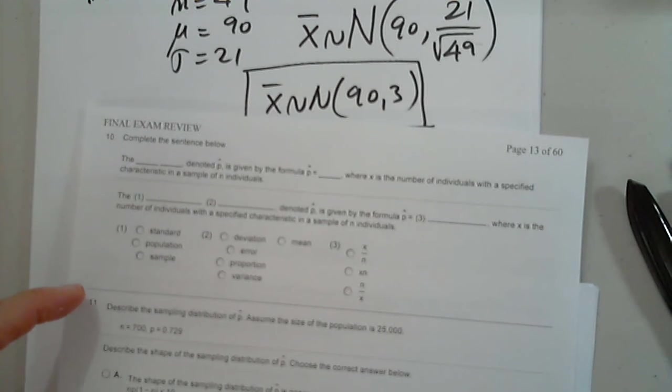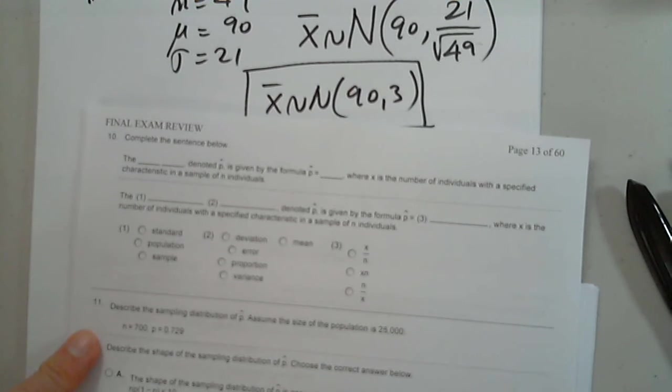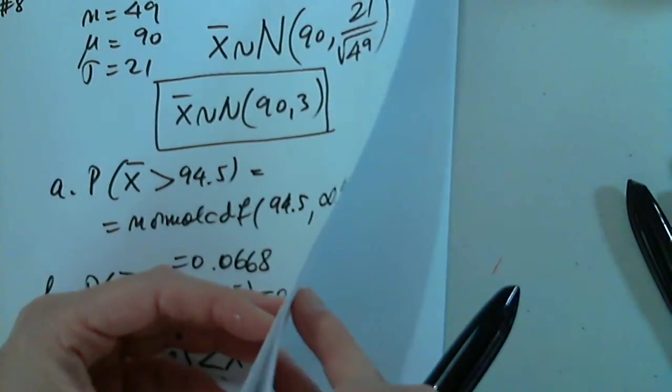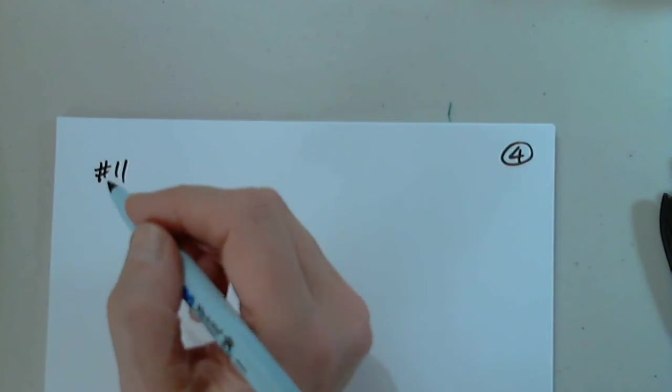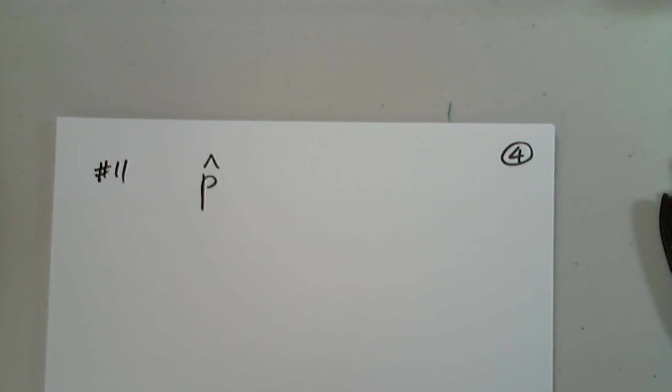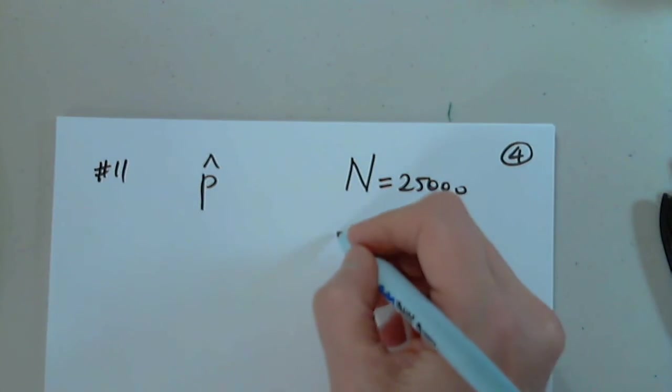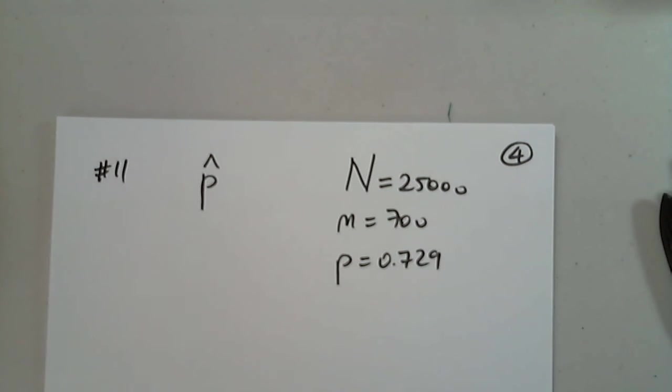We'll stop in 15 minutes, so what about problem 11? Is that okay? So let's look at 11. I'm on page four. That's problem 11. We're asked to describe the sample distribution of p-hat, assuming that the population size is 25,000, the sample size is 700, and p equals 0.729. Describe the shape of the sampling distribution of p-hat.